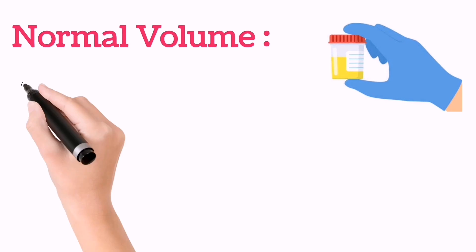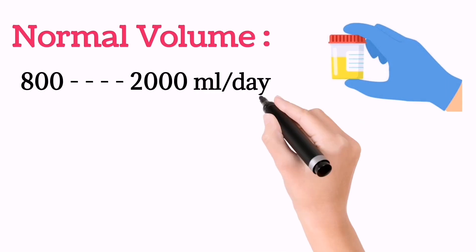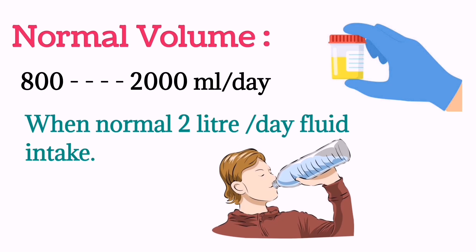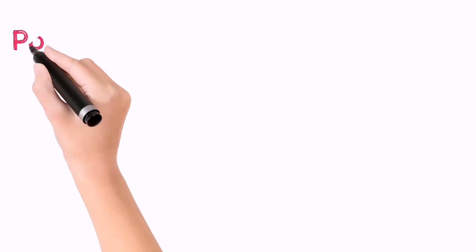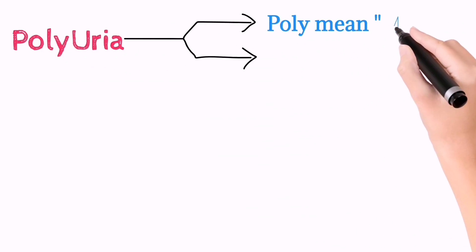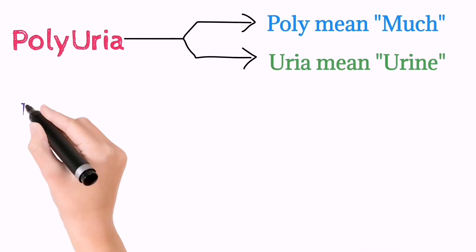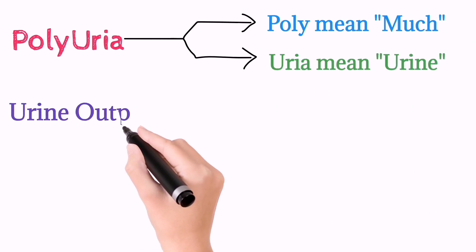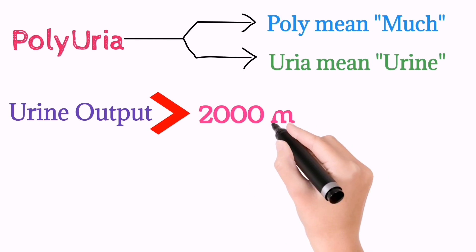The normal volume of urine is 800 to 2000 milliliters per day, if someone intakes two liters per day of fluids. Polyuria is a combination of 'poly' which means much, and 'uria' which means urine. So when the urine output becomes greater than 2000 milliliters per day, the condition is called polyuria.